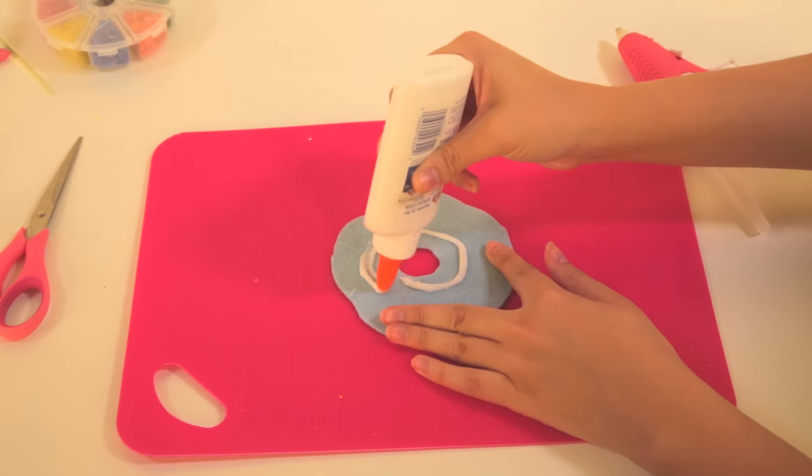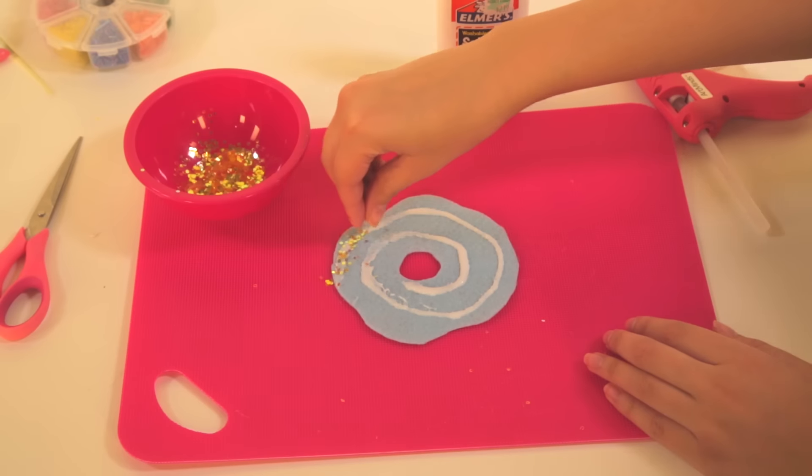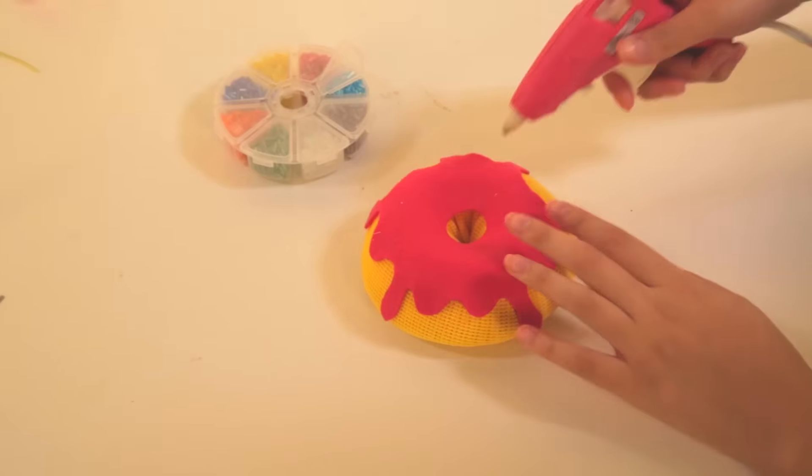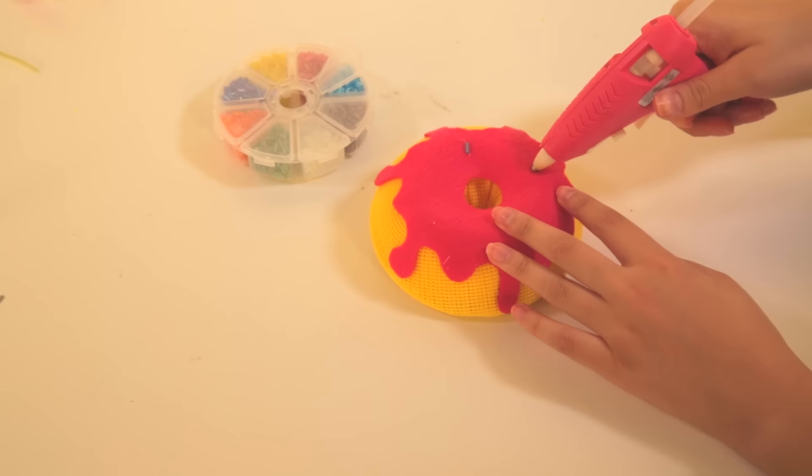If you're using glitter, I suggest gluing it onto the felt before attaching it to the donut. Using a hot glue gun, carefully attach your beads to the felt.